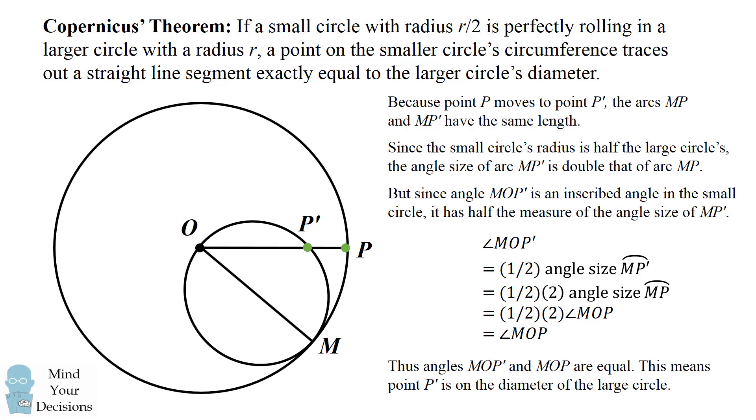Therefore, we've shown that angles MOP' and MOP are equal to each other, and that's what we wanted to prove. This means point P' is on the diameter of the larger circle.